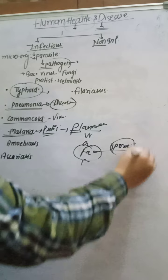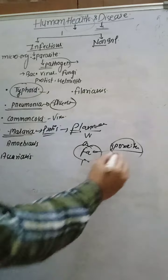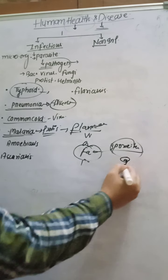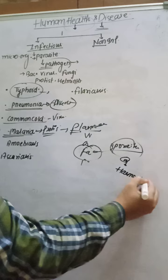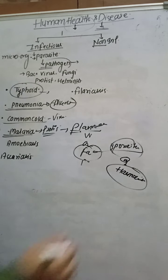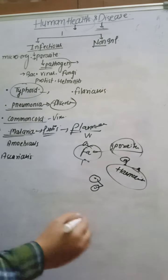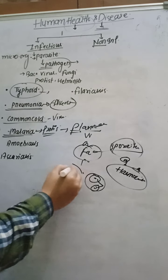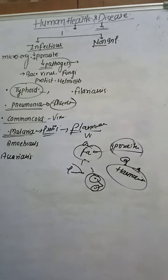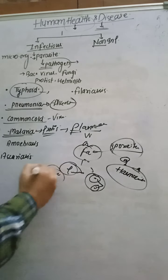The sporozoite is the infective stage for human beings. Sporozoites reach the person by bite of female Anopheles mosquito, enter the blood, reach liver cells and infect them. After liver cells, they infect blood cells. The bursting of blood cells releases a toxic substance - haemozoin - which causes chilling and shivering in the person. Then gametocytes are formed in the blood cells of the human being, and are taken up by the female Anopheles mosquito during a blood meal. Fertilization takes place in the gut of the mosquito.